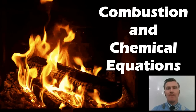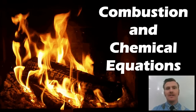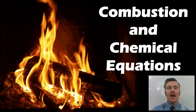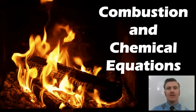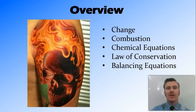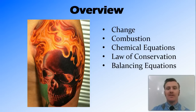In this video we're going to look at combustion as an example of a chemical reaction and use that to make chemical equations. We're first going to briefly review the concept of change, and in particular chemical change. We'll then look at the combustion reaction and write the chemical equation for that reaction. Then we'll look at the law of conservation of mass and how that relates to balancing equations.